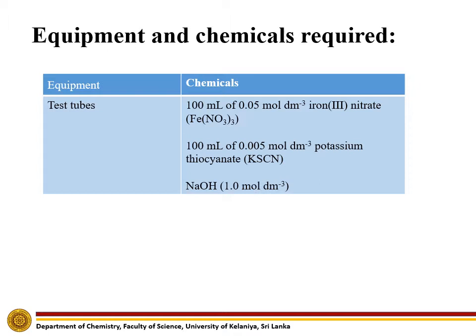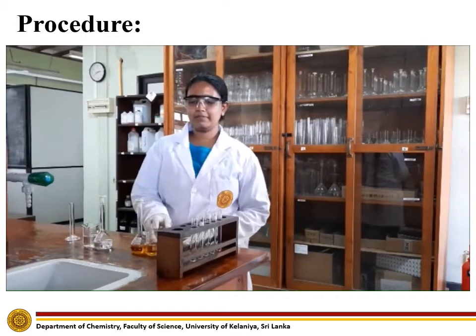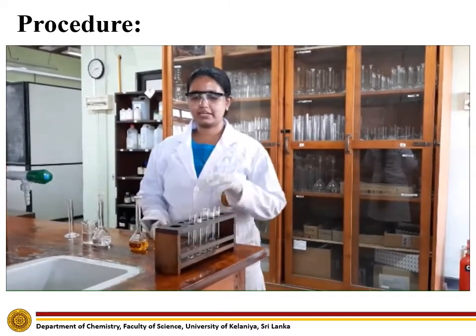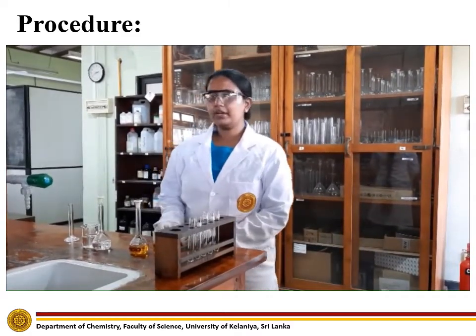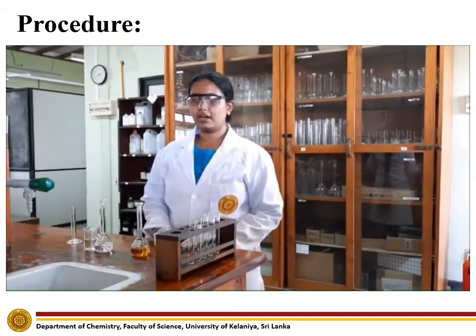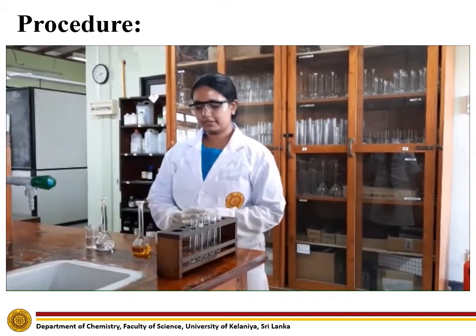Now let's see how the experiment is done. First, put 2 ml of ferric nitrate solution into a test tube. Since this is a qualitative experiment, volumes can be measured using a measuring cylinder.